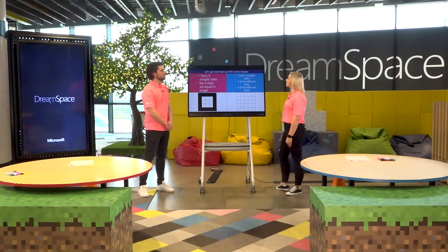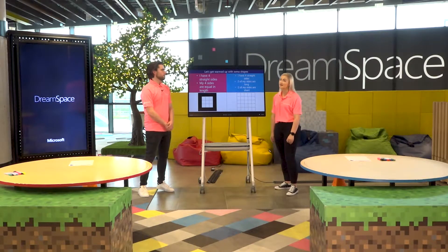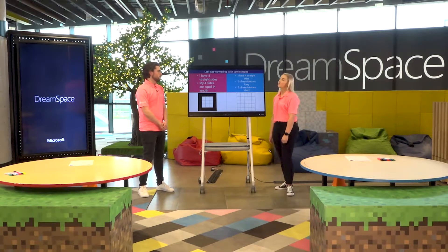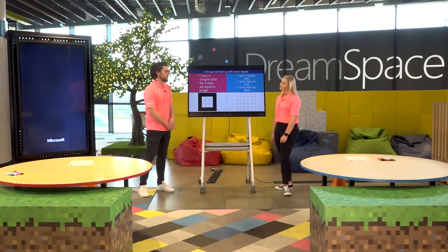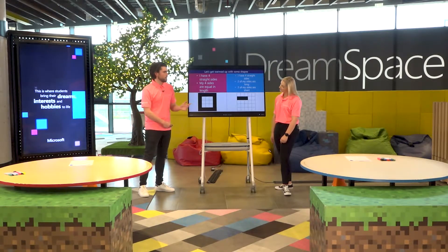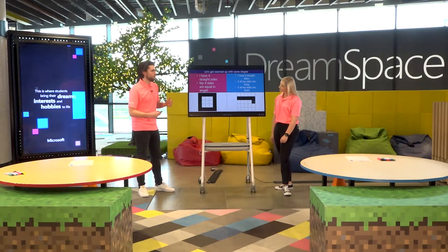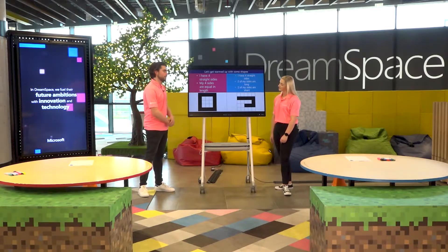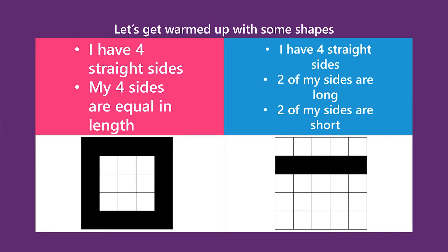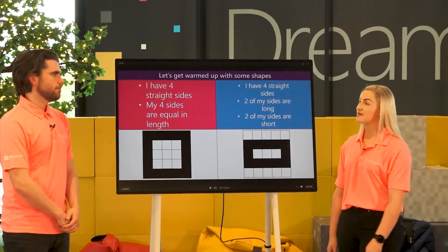And our second one, Michael — I have four straight sides, and two of my sides are long and two of my sides are short. So what do you think that one might be? Well, maybe let's look at it in pixelated form first and then we can recognize it. So we have our long side, we have our short side, we have another long side, and then another short side. And that makes a rectangle, doesn't it, Niamh? It looks like a rectangle to me. Brilliant.